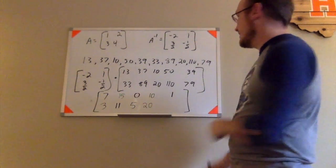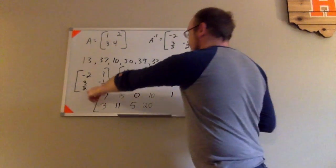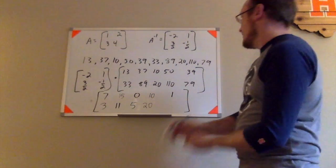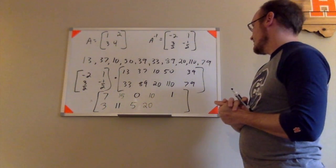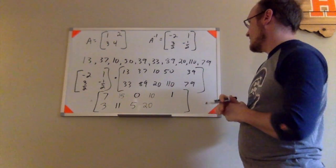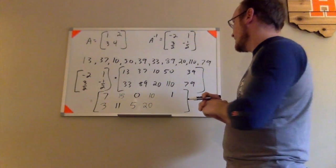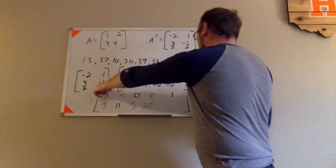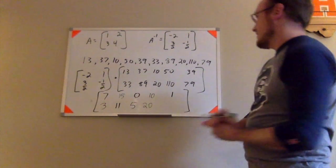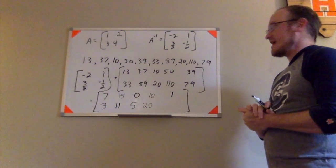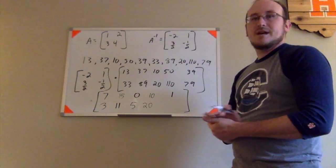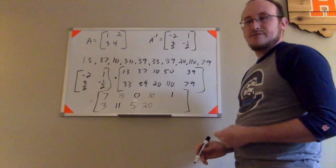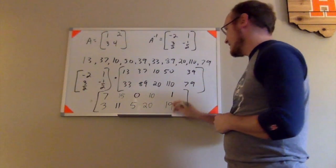And then finally, last row there, I have 3 halves times 39. That would be 117 halves. And negative 1 half times 79 would be negative 79 halves. When I put that together, I should end up with 38 halves. 38 halves. 38 divided by 2 is, in fact, 19.